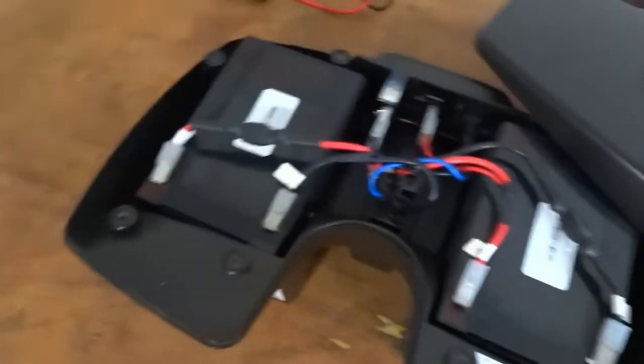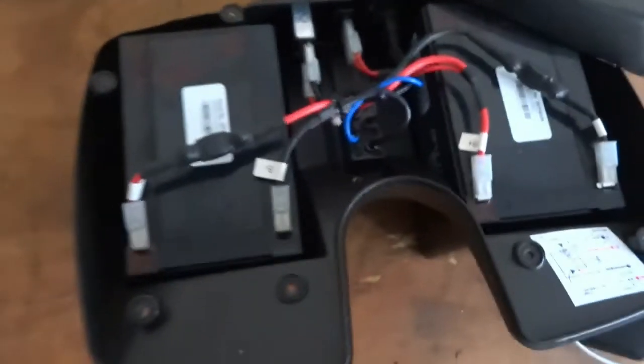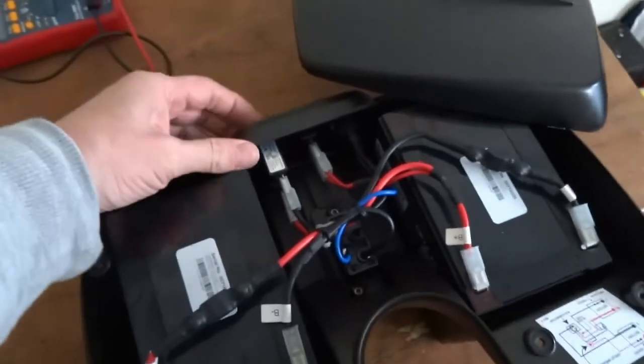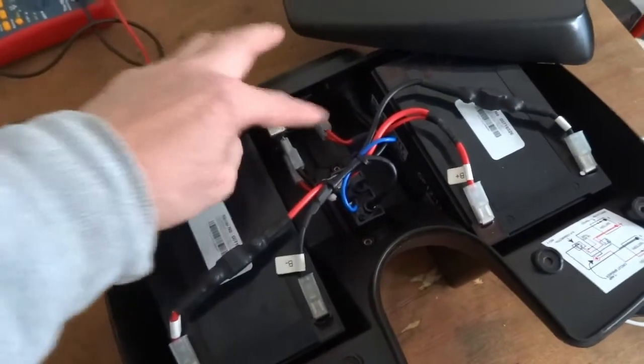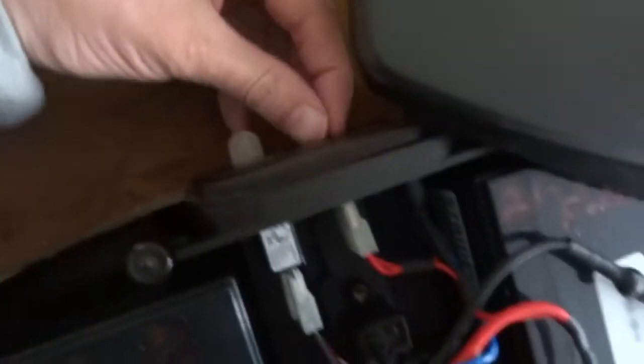So this is the battery pack on this mobility scooter that I'm just working on at the minute. It's obviously two batteries, looks like a resettable fuse and a normal blade type fuse there that fits in the front end.